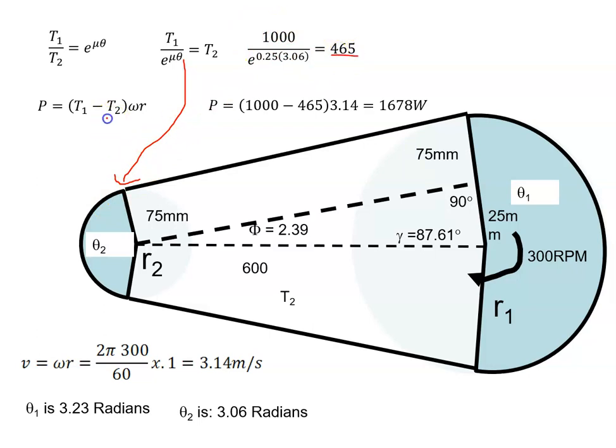I'm going to put 465 in here for T2, and I put 1,000 in here for T1, and I have my omega r from down here, and I put those values in, I can work out what the maximum power that this pulley can transmit. So that's what we were asked to do.